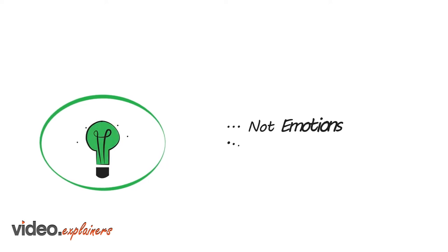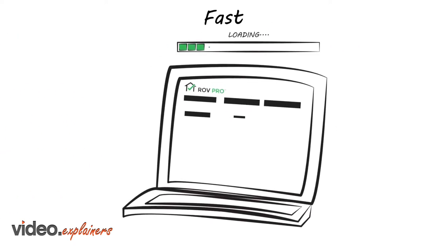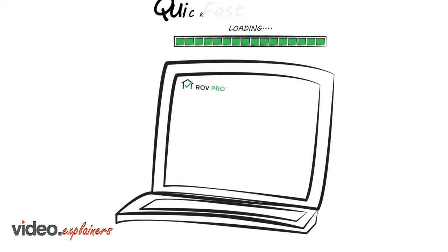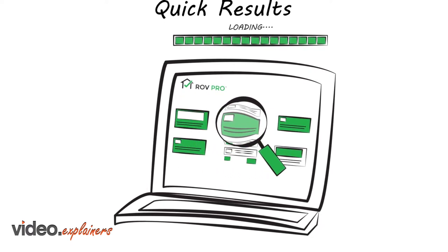By utilizing ROV Pro, you are helping the appraiser by presenting facts rather than making guesses or emotional appeals. This streamlines the process for the appraiser and speeds up the process significantly. The appraiser is then more likely to consider the comparable if it fits within their own original search parameters.